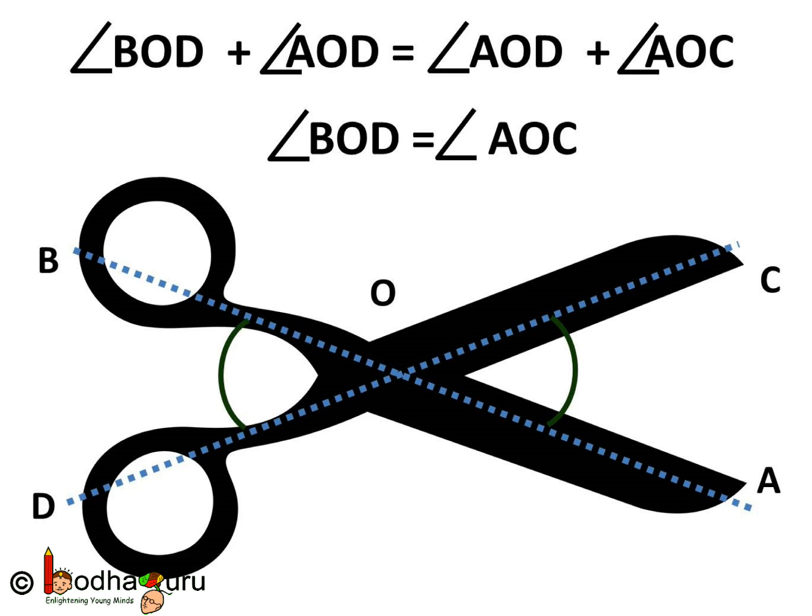So we can say angle BOD plus angle AOD is equal to angle AOD plus angle AOC. Now we can cancel angle AOD from both sides and what do we get? We get angle BOD is equal to angle AOC.